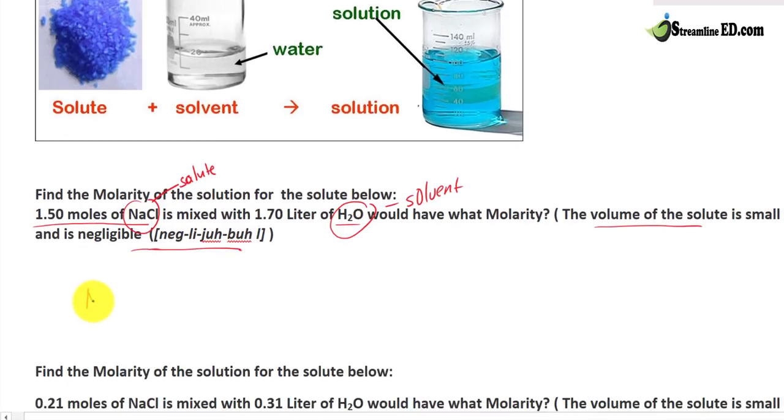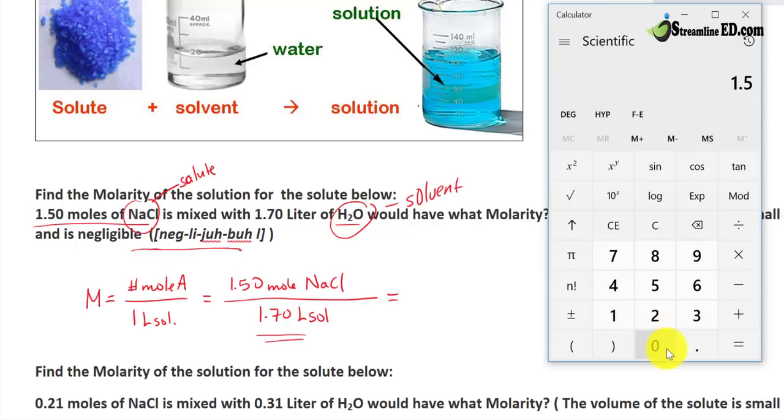We know that molarity, which is M, is equal to the number of moles of A, divided by 1 liter of solution. So if we do that, all we have to do is just plug in the values. 1.50 mol of NaCl, divided by 1.70 liter of solution. Notice how we don't have the 1 liter of solution down here, because if this is a fraction, all we have to do is plug in a calculator, and that's pretty much it.